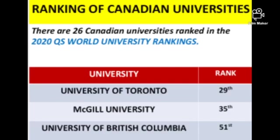There are 26 Canadian universities ranked in the 2020 QS World University Rankings. University of Toronto is ranked 29th, McGill University 35th, and University of British Columbia 51st.